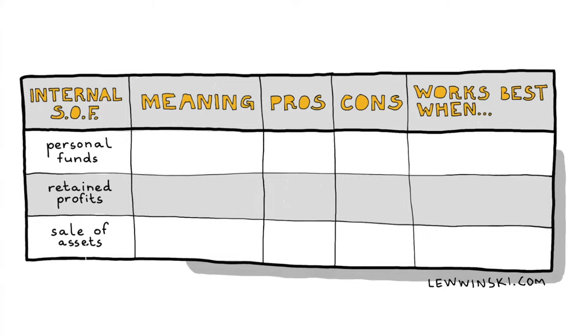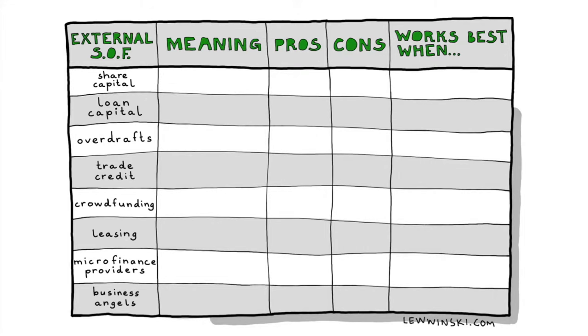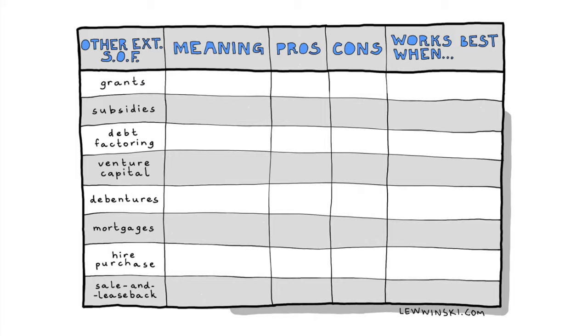In the last part of this video class — part three — we're going to talk about short-term and long-term sources of finance. But actually, we're not going to learn anything new. We've already learned three internal sources of finance in part one and eight more external sources in part two. In this part, we're just categorizing the ones we already know into short-term and long-term, and learning to recommend these sources of finance in different situations.